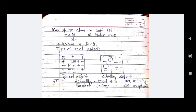Now let's consider imperfections in solids. We have point defects, of which there are two types: Frenkel defect and Schottky defect. In Schottky defect, equal numbers of positive and negative ions are missing. In Frenkel defect, only the cations are misplaced. We can remember this with the mnemonic SEFC: Schottky — Equal numbers of positive and negative missing; Frenkel — Cations misplaced. This is all about the solid state. Thank you very much.